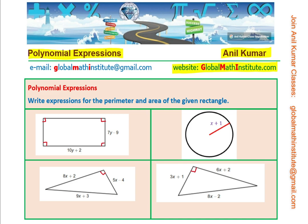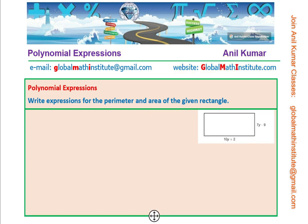You can always pause the video and answer the question and then look into my suggestions. Let us begin with the very first one which is rectangle. As you know, area of a rectangle is what? Let us write down the formula first and then we will write the polynomial expression. The area of a rectangle is given as length into width. In this side, we are given length L as equal to 10y plus 2 and width W is given to us as 7y minus 9.